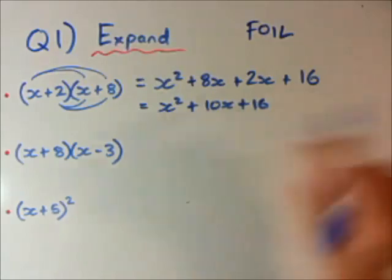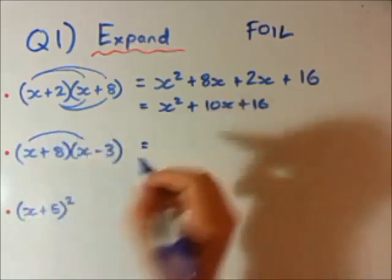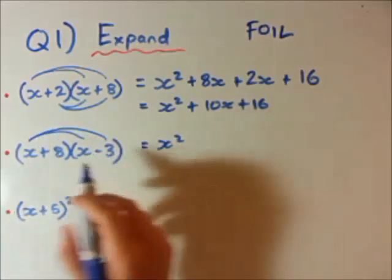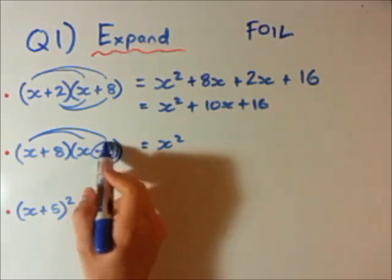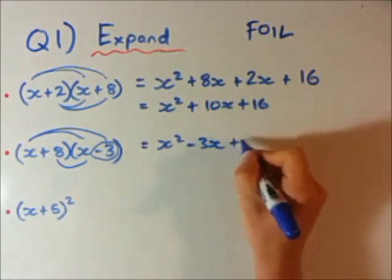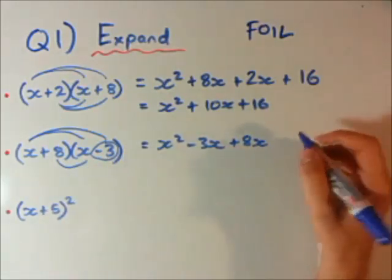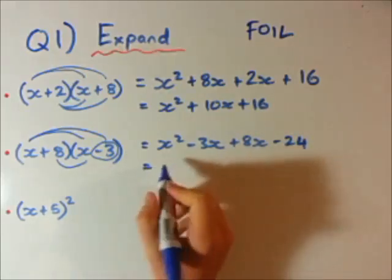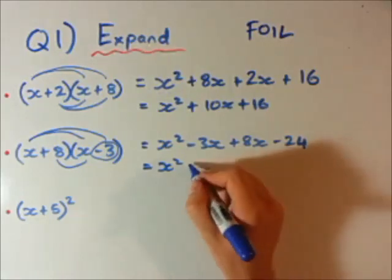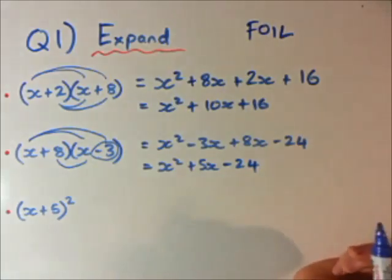But we're going to do a lot more of that later on. So back to what we're doing here, expanding brackets, let's do the same thing again for this one here. So, x by x, x squared, x by minus 3, so it'll be minus 3x, 8 by x, 8x, 8 times minus 3 is minus 24, group the like terms, minus 3x plus 8x is 5x, minus 24.